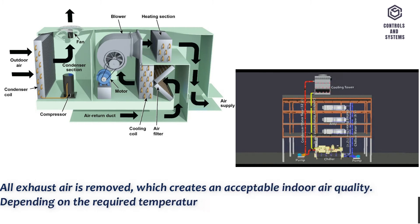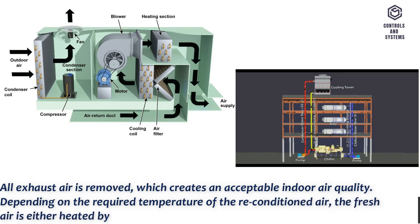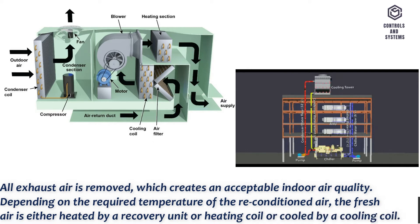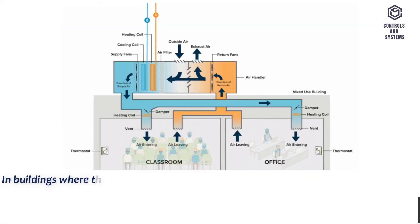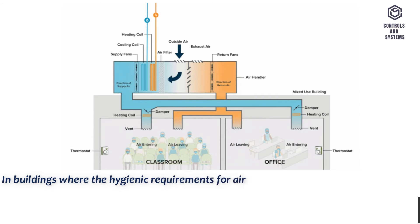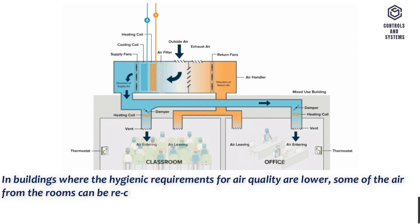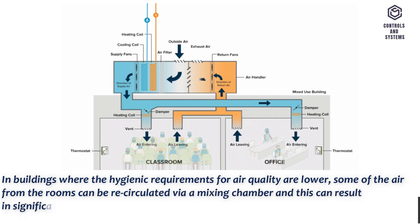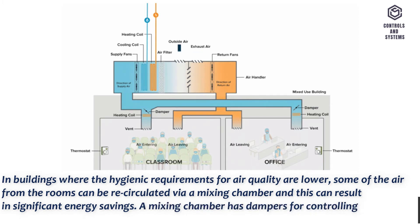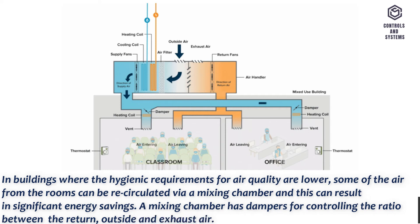Depending on the required temperature of the reconditioned air, the fresh air is either heated by a recovery unit or heating coil, or cooled by a cooling coil. In buildings where the hygienic requirements for air quality are lower, some of the air from the rooms can be recirculated via a mixing chamber, resulting in significant energy savings. A mixing chamber has dampers for controlling the ratio between the return, outside and exhaust air.